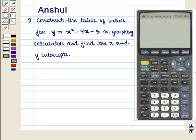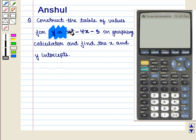Hello and welcome to the session. In this session we are going to discuss the following question. The question says: Construct the table of values for the equation y = x² - 4x - 5 on graphing calculator and find the x and y intercepts.